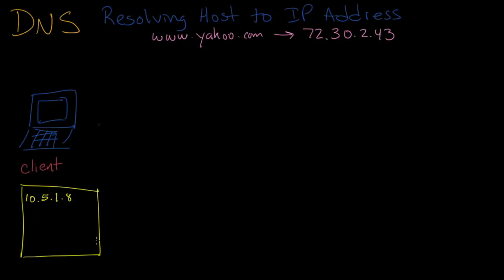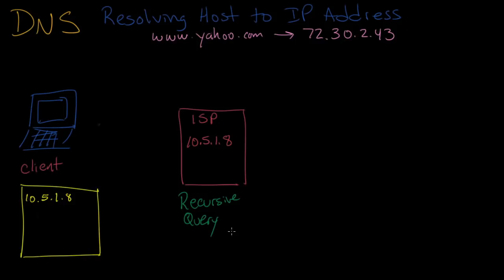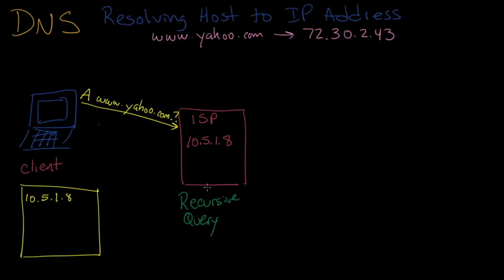10.5.1.8 is the IP address of a DNS server for the internet service provider. So your ISP has a DNS server which is going to act on your behalf to do DNS lookups for you. This is called a recursive query — you issue every request to the ISP, and the ISP in turn re-issues that request to other DNS servers in order to get the answer for you. So your client computer starts out by issuing a request to the ISP, asking a simple question: what is the address for www.yahoo.com? If this is the first time this DNS server has seen this request, it's not going to know the answer, so it needs to ask someone else.